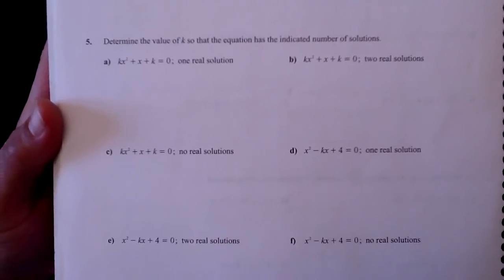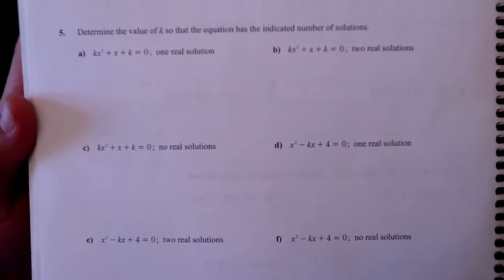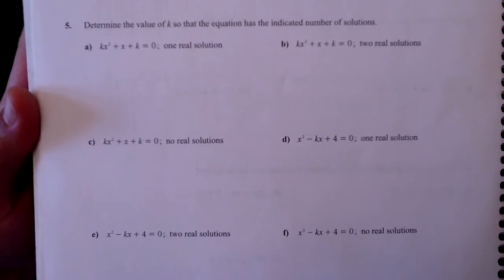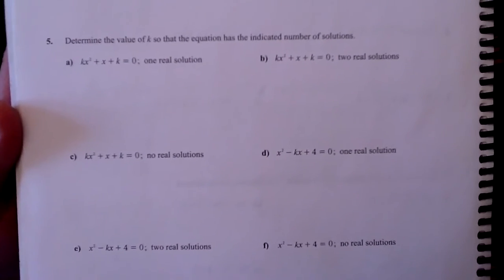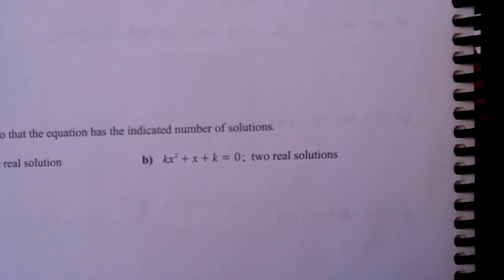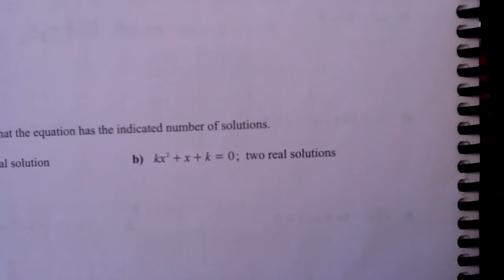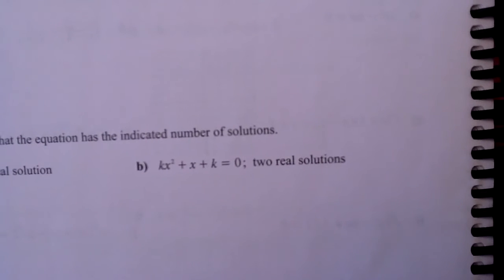So let's do a couple of these. Let's start with B, and if I'm still alive after B, we'll go on into E. So B says k x squared plus x plus k equals zero, and there are two real solutions.